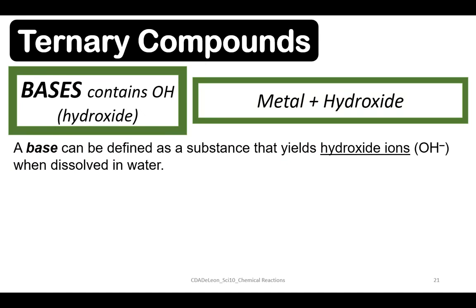Now let's proceed to naming base compounds. The simplest way to define a base is as an ionic compound that produces hydroxide ions when it dissolves in water. Since they all contain the OH anion, names of bases end in 'hydroxide'.